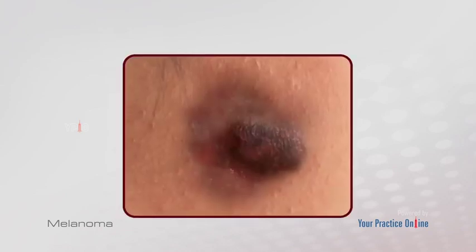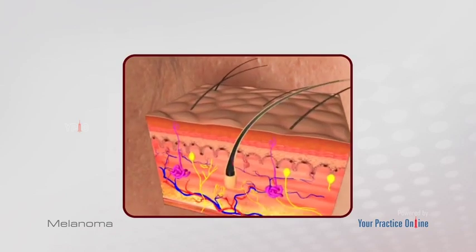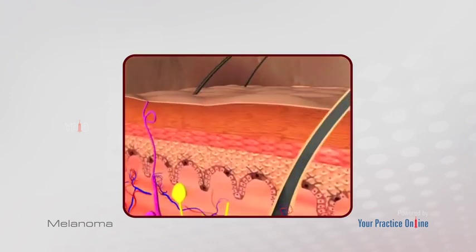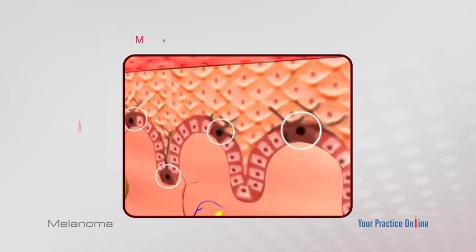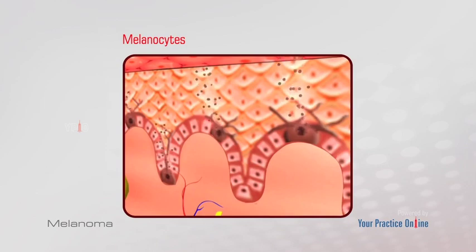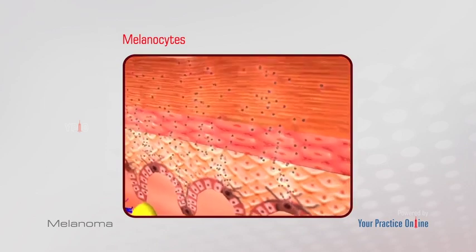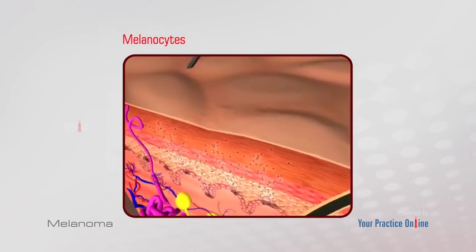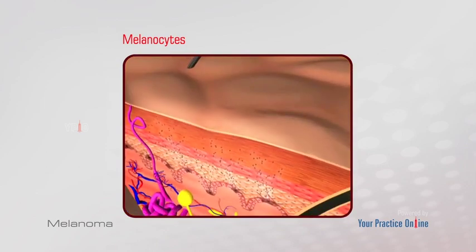Melanoma, the most serious type of skin cancer, begins in skin cells called melanocytes. Melanocytes produce the pigment melanin, which determines the color of skin, hair, and eyes.